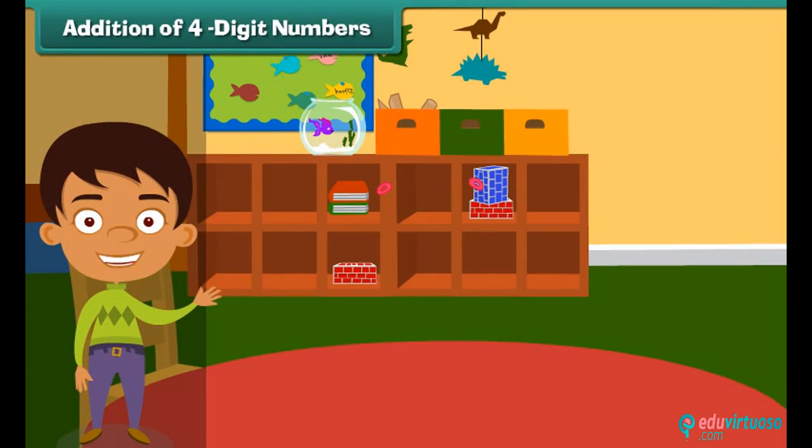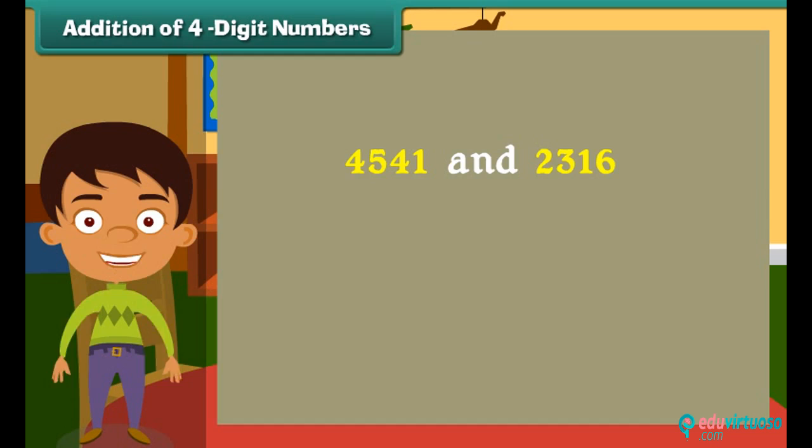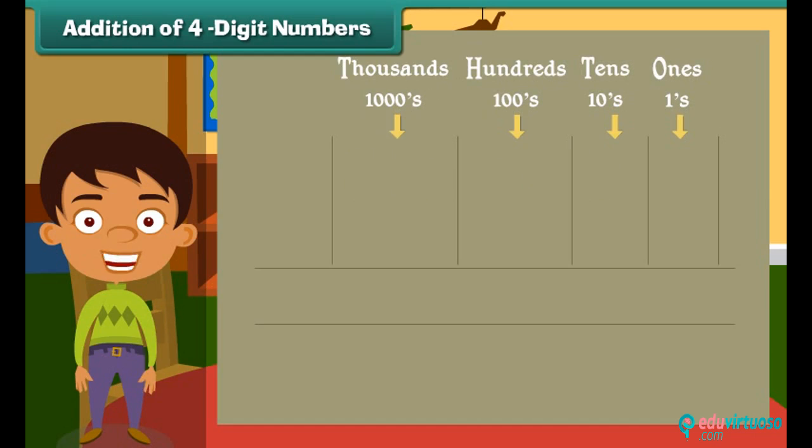Addition of four-digit numbers. The first problem that Ben picks to solve is to add given numbers 4541 and 2316. Start solving the question by writing the numbers in these lines. Remember that we begin adding from ones. So here the addition is seven.